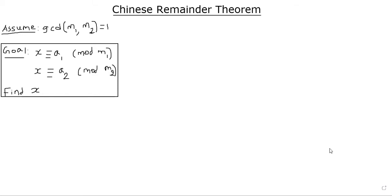You could imagine from an application perspective, you have some number of items. You don't know how many. When you group by M1, you get A1 leftovers. When you group by M2, you get A2 leftovers. So you wanted to find out what could be the possible value of x.